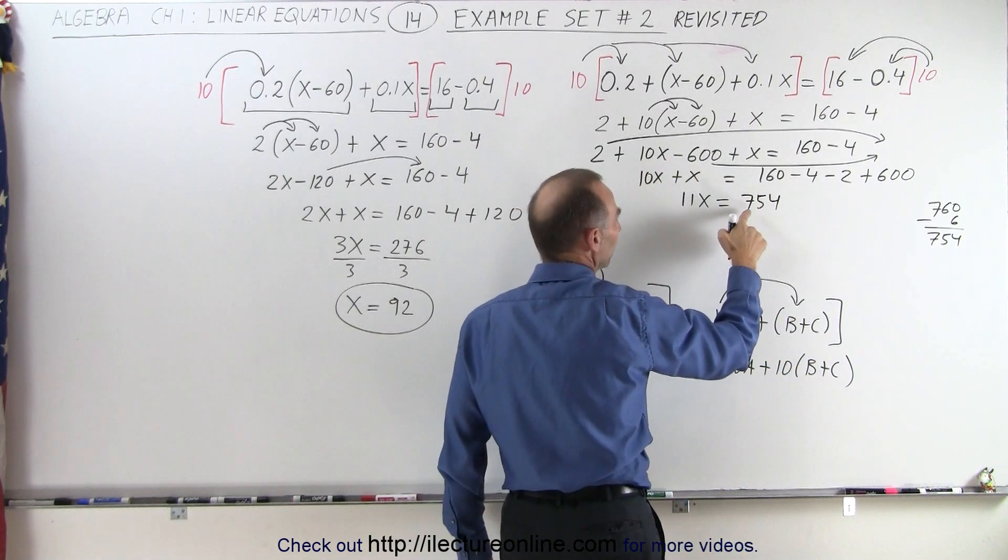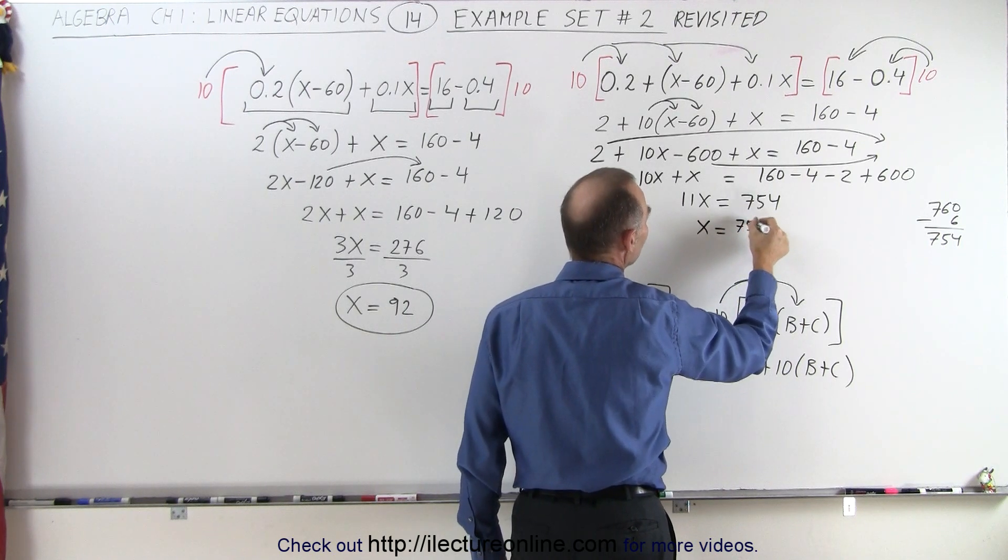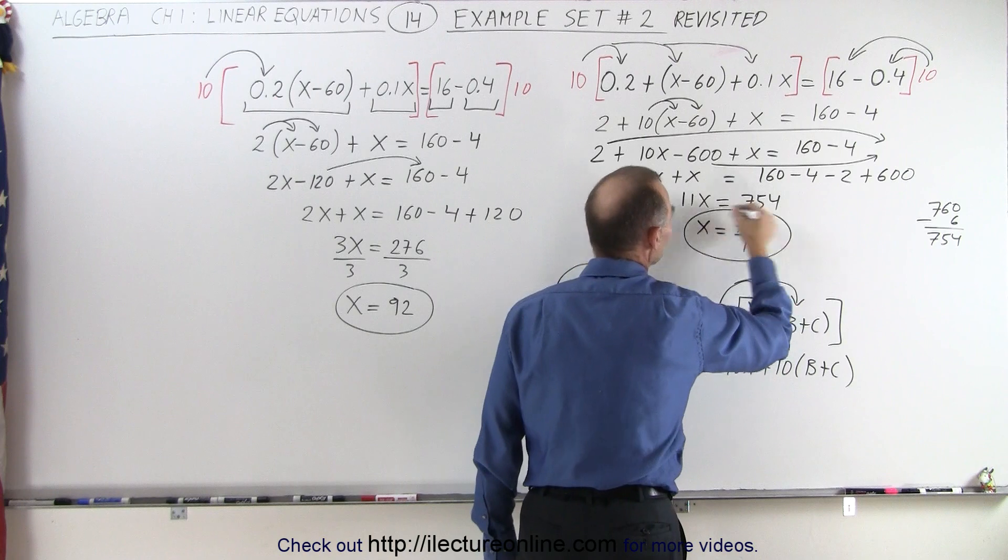Now this does not look like it's divisible by 11 so it gives us x is equal to 754 divided by 11 as a final answer.